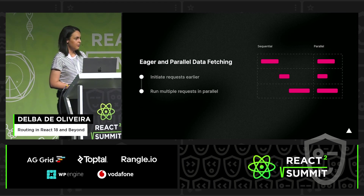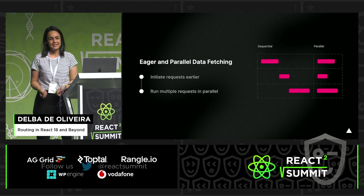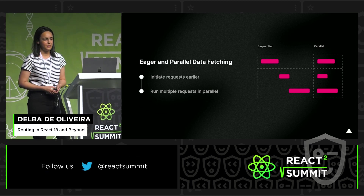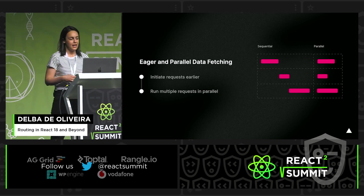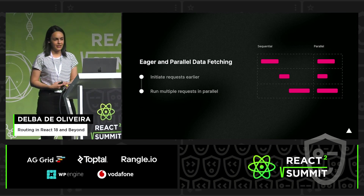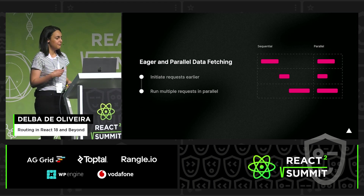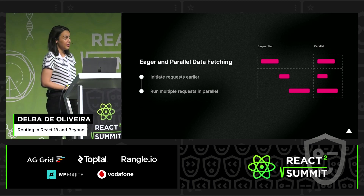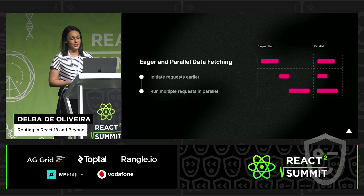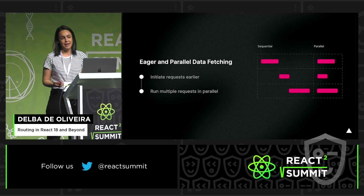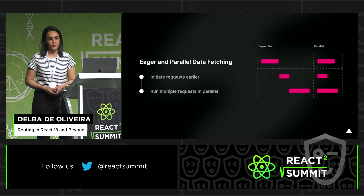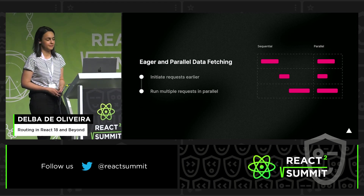By building a new router with React server components, we're able to achieve three things: reduce the amount of code we send to the client, reduce the amount of work the server has to do, and reduce the amount of time it takes to do that work.